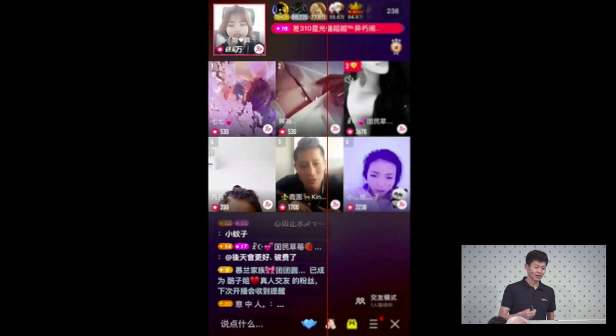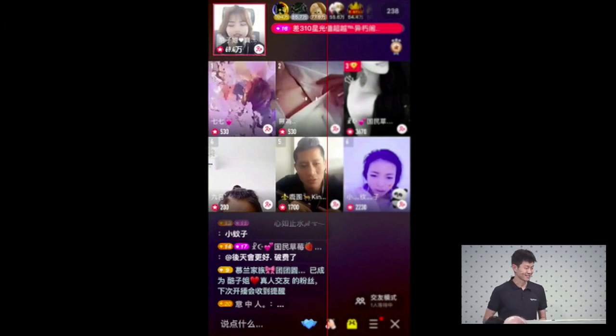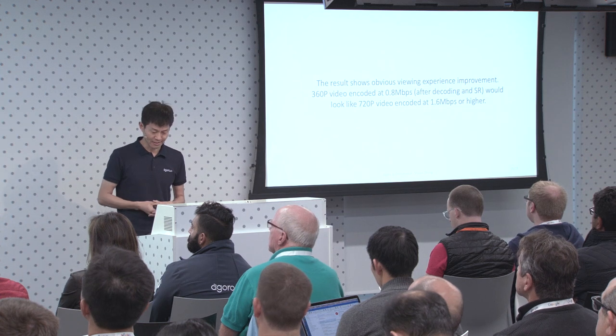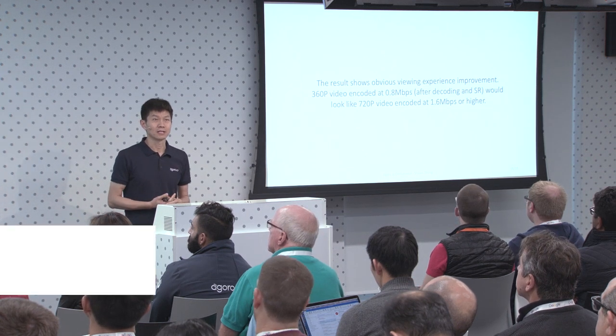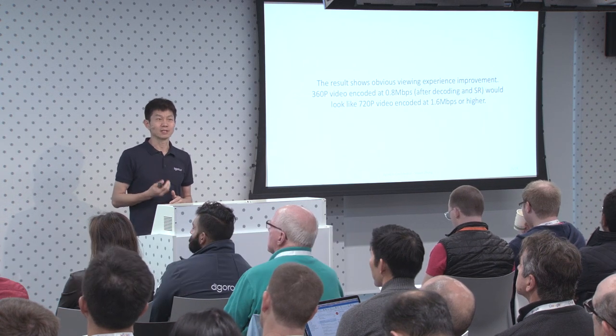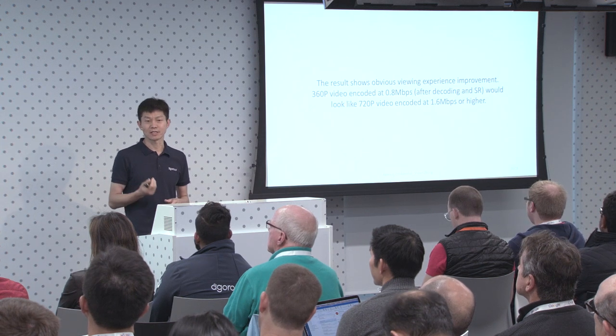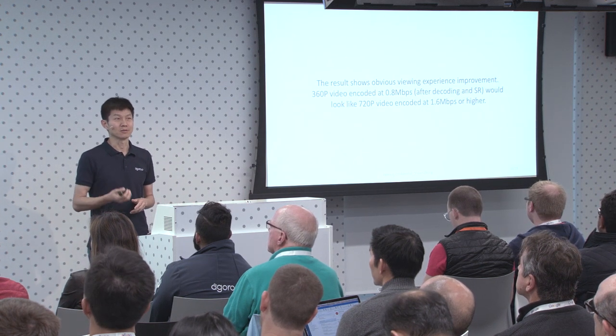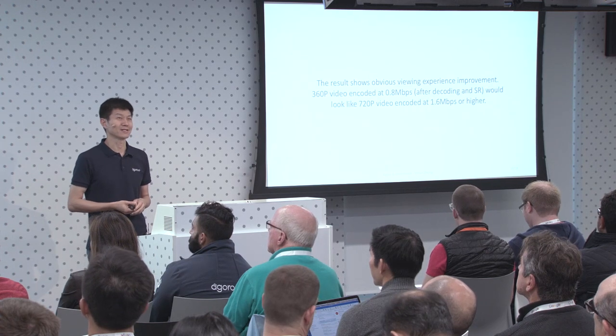We also have a live demo at our Agora booth outside. We have an iPhone 7 running this model. Because the model is so small, the footprint and power consumption are very low, with no heat issues. As a result, we significantly improved the viewing experience. It's essentially like a 360p video encoded at 0.8 megabits per second looking like a 720p video encoded at 1.6 megabits per second or higher.